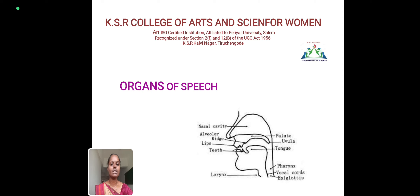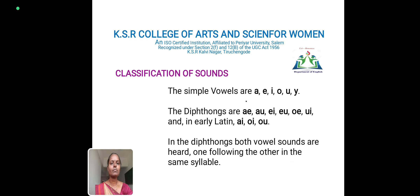While speaking our words or pronouncing some words, we are using these organs. Next, we are going to see about the classification of sounds. There are many classifications in sounds. The simple vowels are A, E, I, O, U — we already know about these.